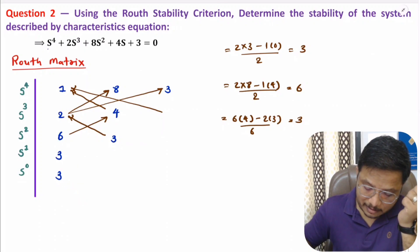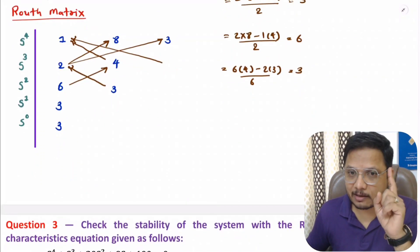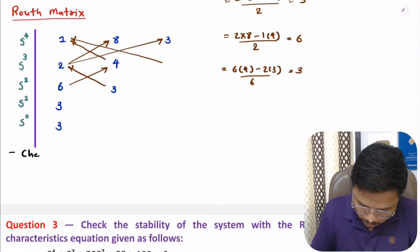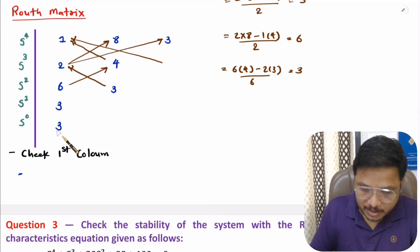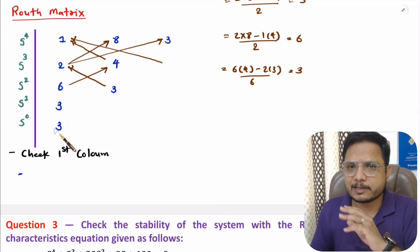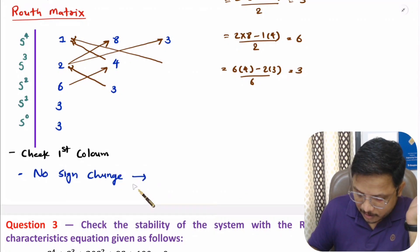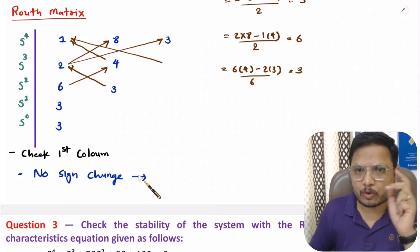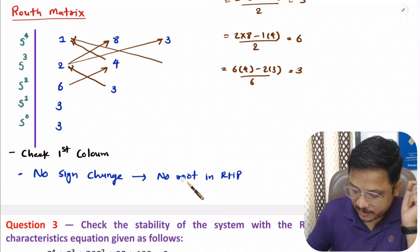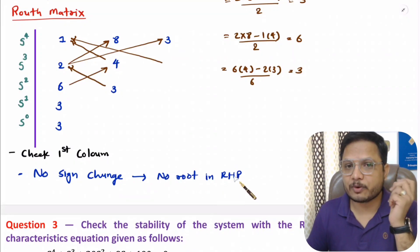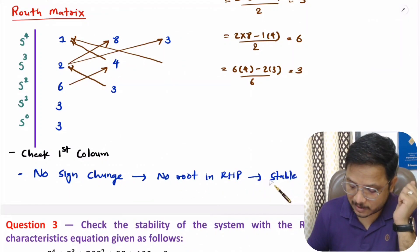In the third step we check the first column. All elements in the first column are positive, meaning there is no sign change. This means there is no root in the RHP, so we can say the system is stable.